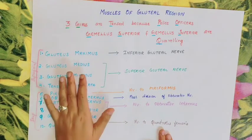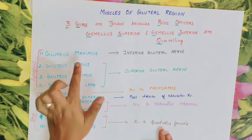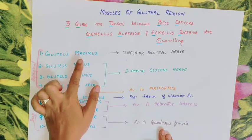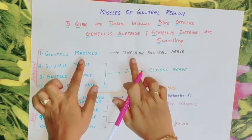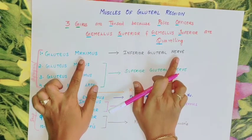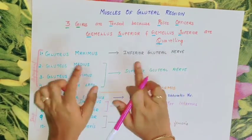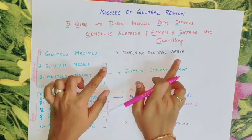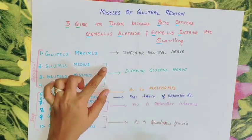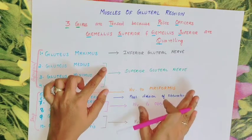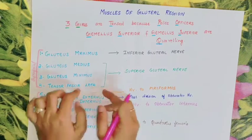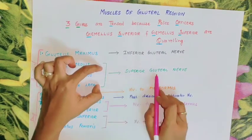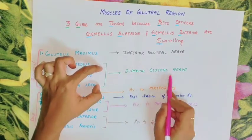Now we move on to the nervous supply. Gluteus Maximus is supplied by the Inferior Gluteal Nerve. Gluteus Medius, Gluteus Minimus, and Tensor Fasciae Latae are supplied by the Superior Gluteal Nerve.